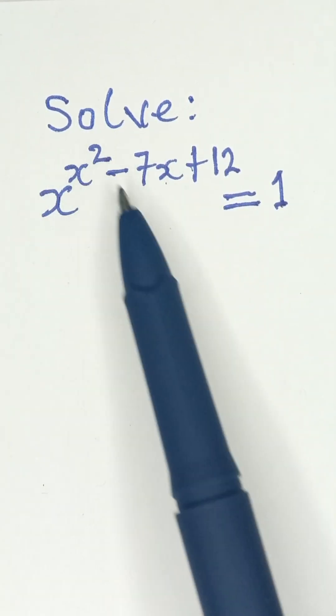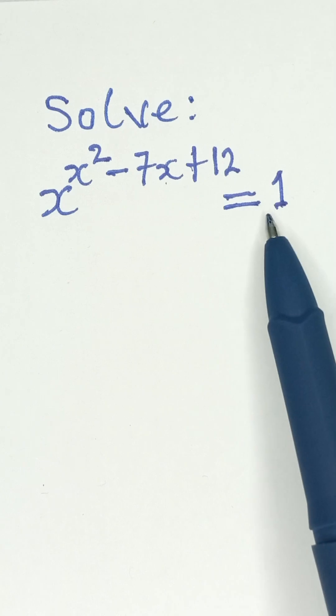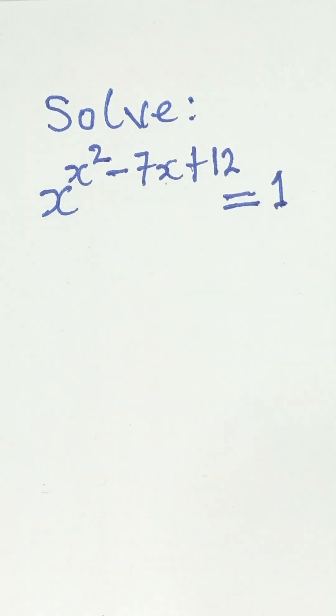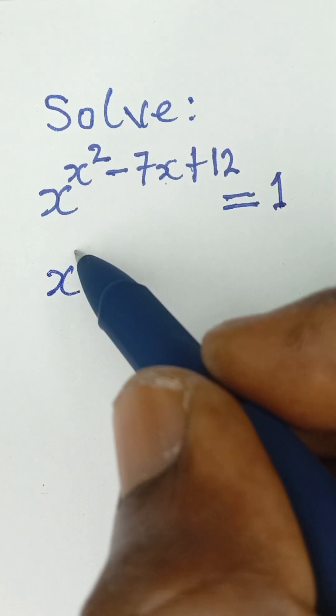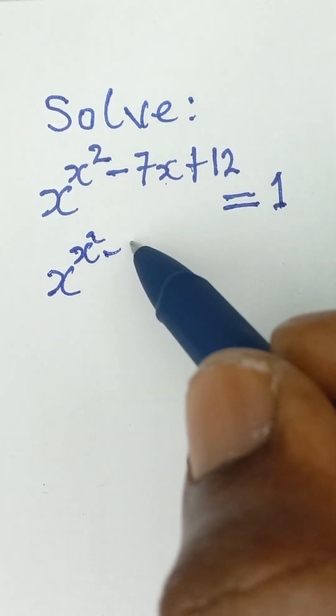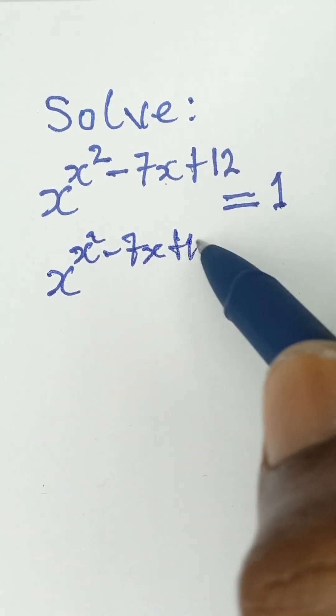Solve x raised to the power x squared minus 7x plus 12 is equal to 1. Now, for us to simply do this, we can simply write x raised to the power x squared minus 7x plus 12.